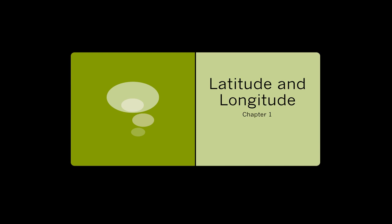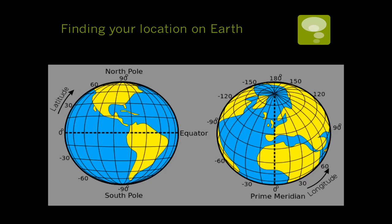This video will review latitude and longitude as part of Chapter 1. We use latitude and longitude to locate positions on the Earth, since the Earth is a sphere. We need two coordinate systems: one that measures north and south, and one that measures east to west.